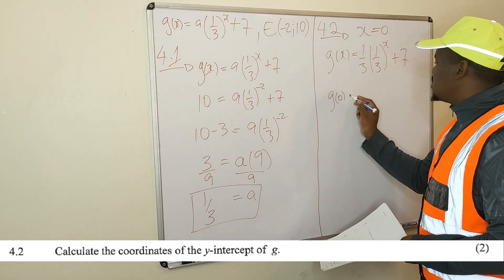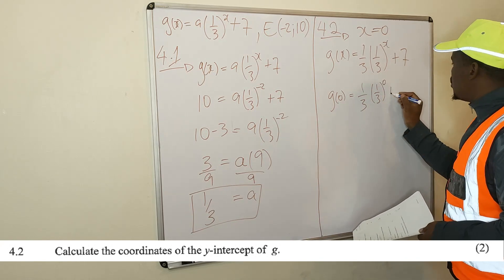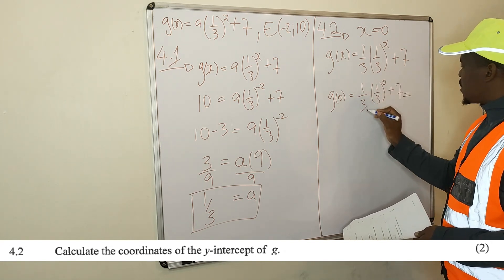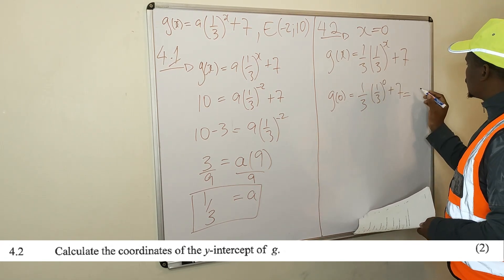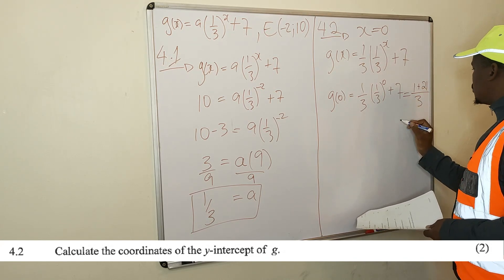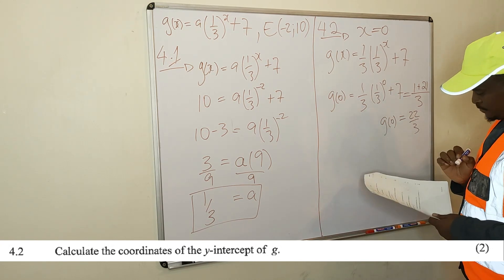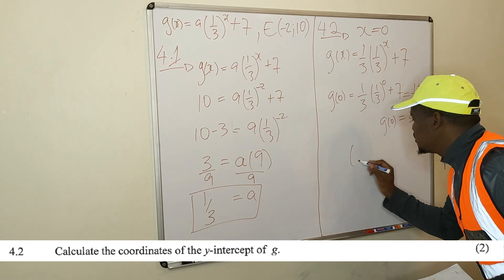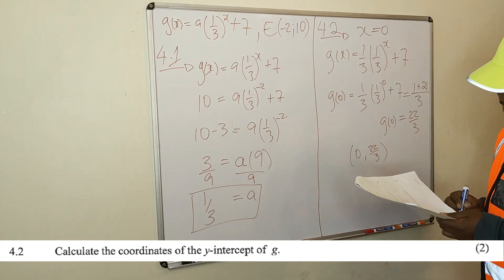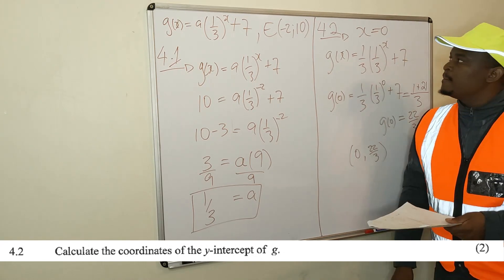So g of 0 is equal to (1/3) times (1/3) raised to 0, plus 7. Since (1/3) raised to 0 is 1, g of 0 equals (1/3) times 1 plus 7, which equals 22/3. So the coordinates of the y-intercept are (0, 22/3).